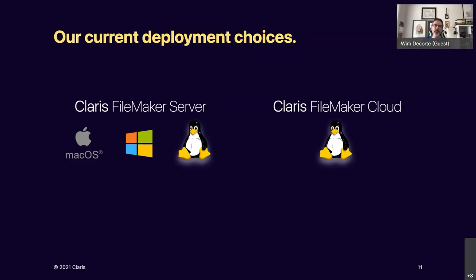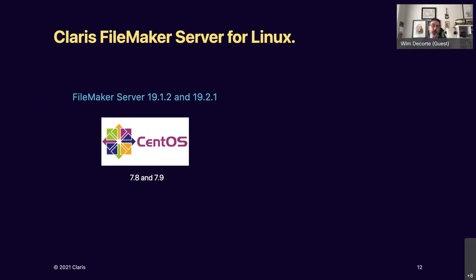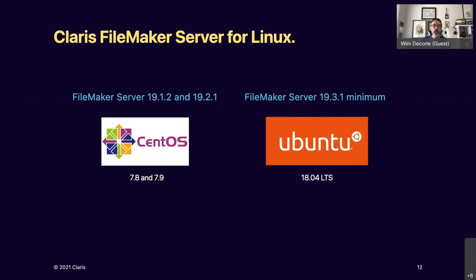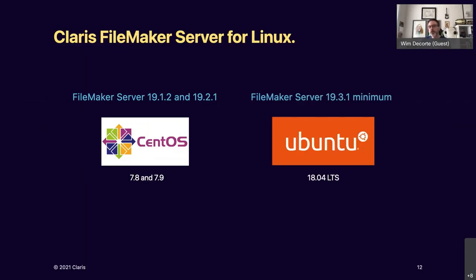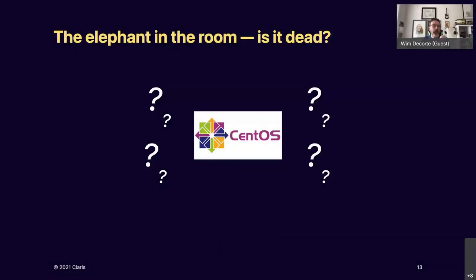We have three versions of Claris FileMaker Server that we can install ourselves, and Claris FileMaker Cloud for fully managed hosting. There are some subtle technical and functional differences between these four deployment choices. The first release of FileMaker Server for Linux was built for the CentOS operating system — that was released with 19.1.2 and updated to 19.2. Recently with the release of 19.3, Claris has made the switch to Ubuntu.